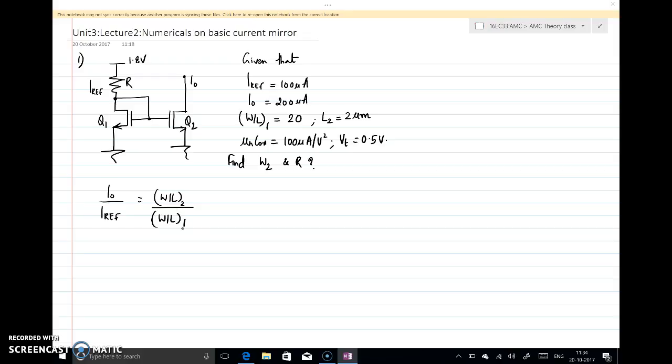Inot is given, Iref is given, so I can directly write - W by L of 1 is given - so this gives W by L of 2 as Inot by Iref into W by L of 1. So if I do that it is 200 micro divided by 100 micro into 20 which is same as 40.